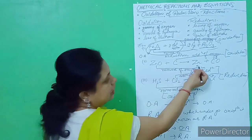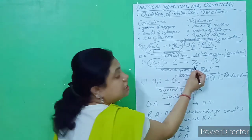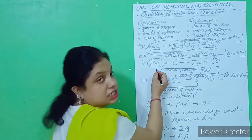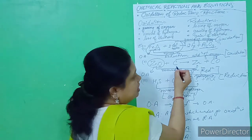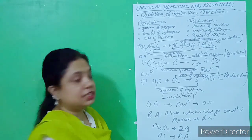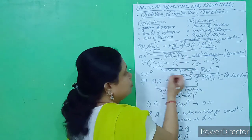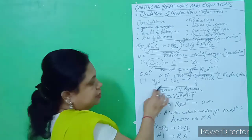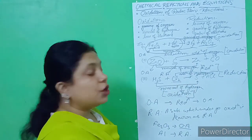In Example 2: zinc oxide to zinc — removal of oxygen, reduction is going on, so zinc oxide is the oxidizing agent. Carbon to CO — oxygen is being added to carbon, so oxidation is going on, and carbon is the reducing agent. In Example 3: H₂S undergoes removal of hydrogen — oxidation — so H₂S is the reducing agent. Chlorine undergoes addition of hydrogen — reduction — so chlorine is the oxidizing agent.